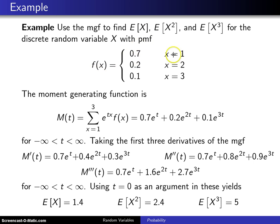f(x) equals 0.7 for x equals 1, 0.2 for x equals 2, and 0.1 for x equals 3.